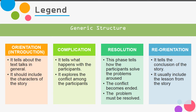After complication comes the resolution. This phase tells how the participants solve the problem that arose — the conflict becomes ended and the problem must be resolved. Then reorientation is the last part of the story. It tells the conclusion and usually includes the lesson — the moral value — that we can learn from the story.